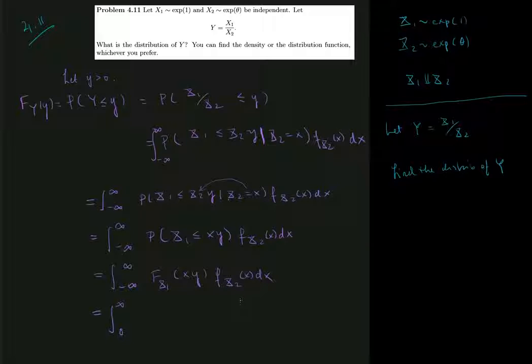And the density of x2 is theta multiplied by e to the minus theta x. And what is the distribution function of x1? Well, it is 1 minus e to the minus x. But here we're evaluating it in xy, so it's e to the minus xy.